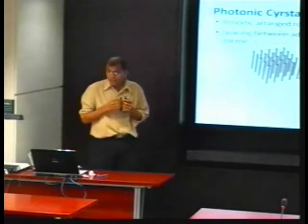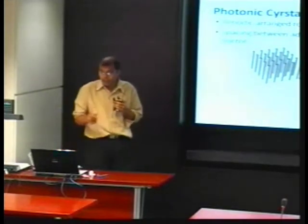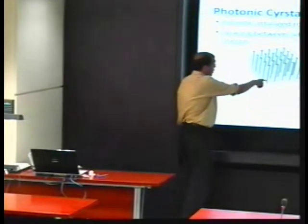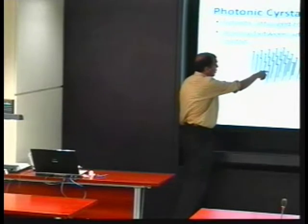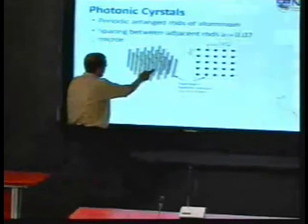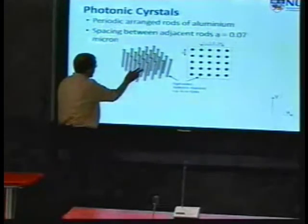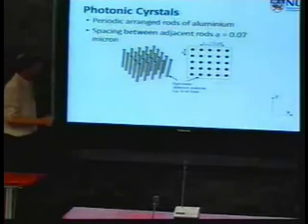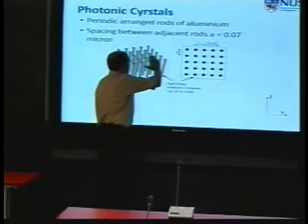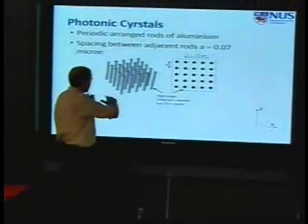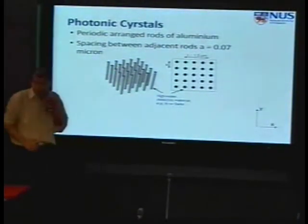For this study, we have considered this type of rod structure, where we have a circular rod of aluminum which are placed at constant distance. While simulating, we can just consider that top view, a cross-section, and we can study their property.